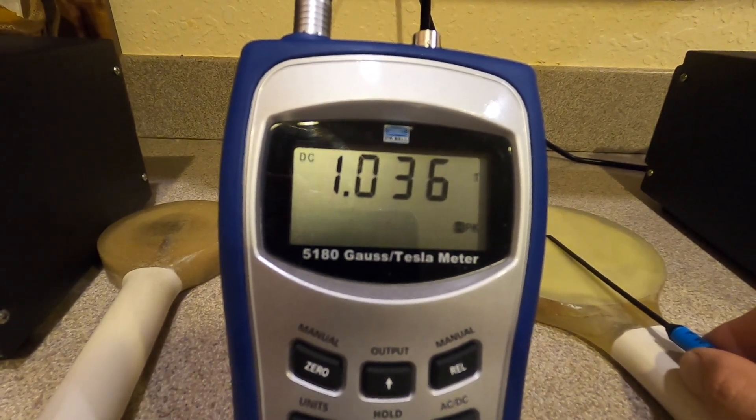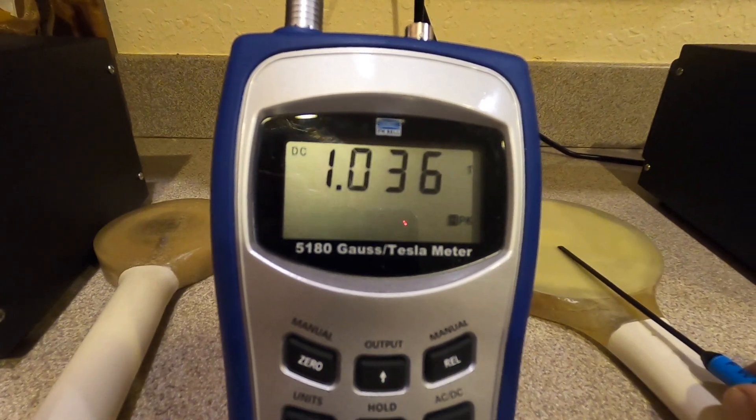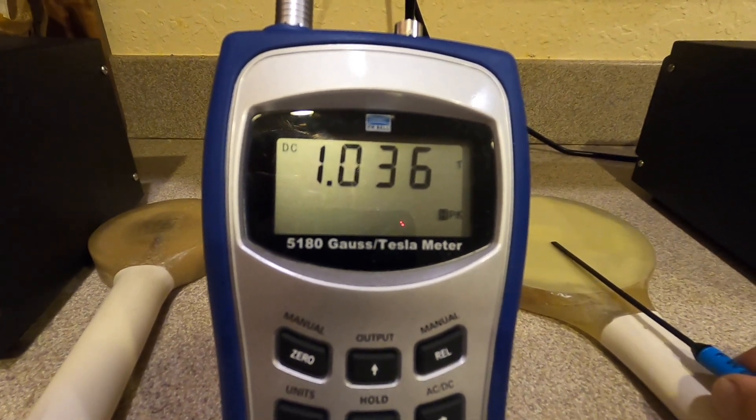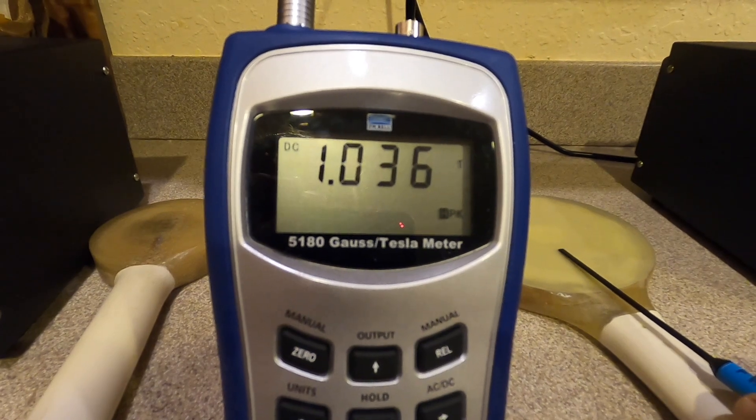It's not increasing. This is the maximum this coil puts out: 0.6 Tesla, 10,000.